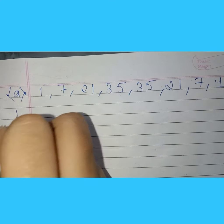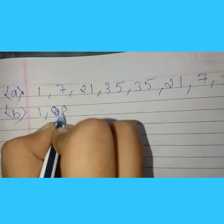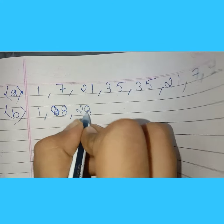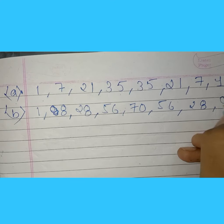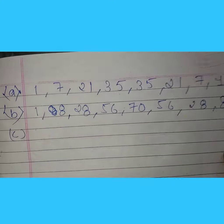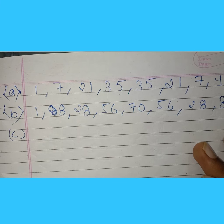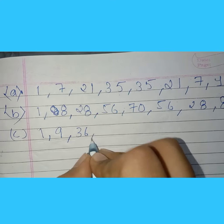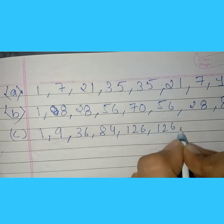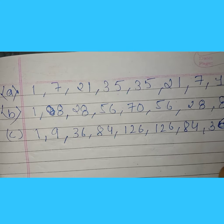Part B says: write row 9 of Pascal's Triangle. The numbers of row 9 are: 1, 8, 28, 56, 70, 56, 21, 8, and 1. Part C says: write row 10 of Pascal's Triangle. The row 10 of Pascal's Triangle is: 1, 9, 36, 84, 126, 126, 84, 36, 9, and 1.